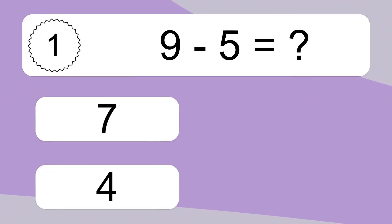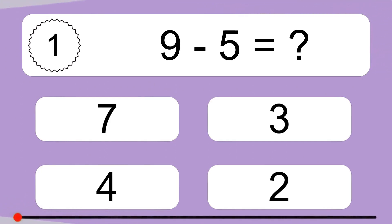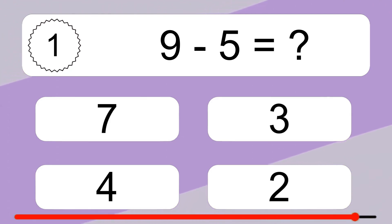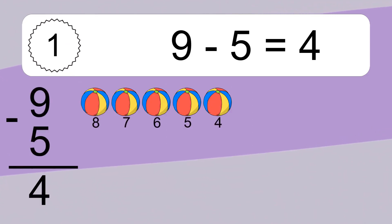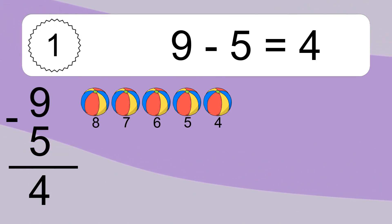9 minus 5 equals what? 9 minus 5 equals 4. Let's count it: 8, 7, 6, 5, 4.